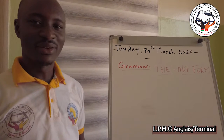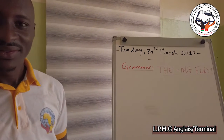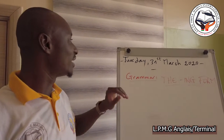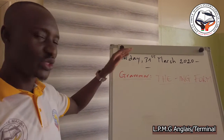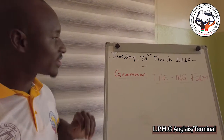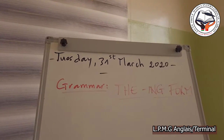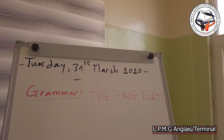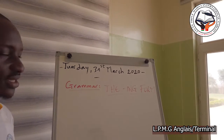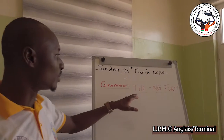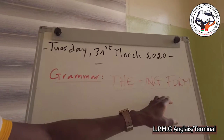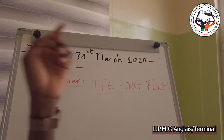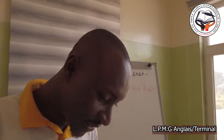Good morning class. How are you? You are fine this morning. Today is the first day, the first of March 2020. Our lesson is a grammar lesson and the title will be the ING form, V-I-N-G form. We go on the lesson.